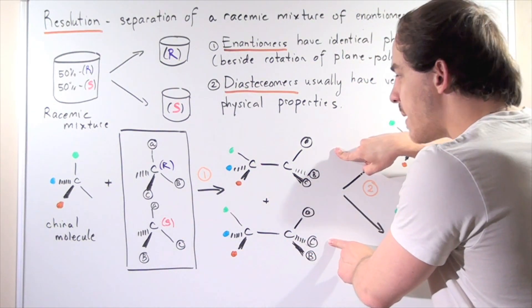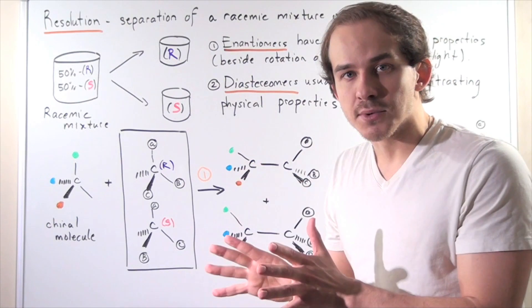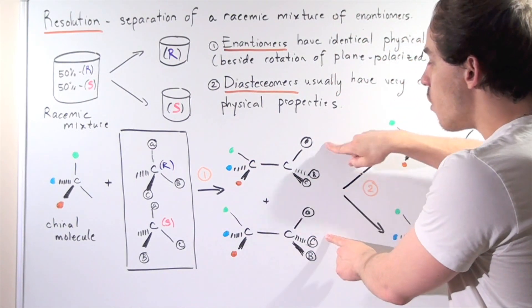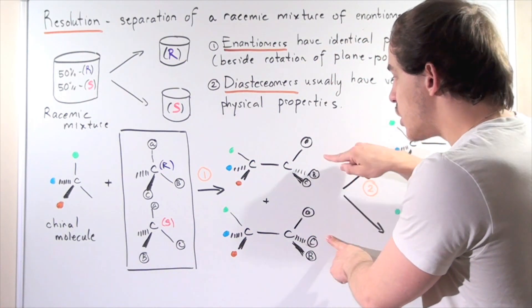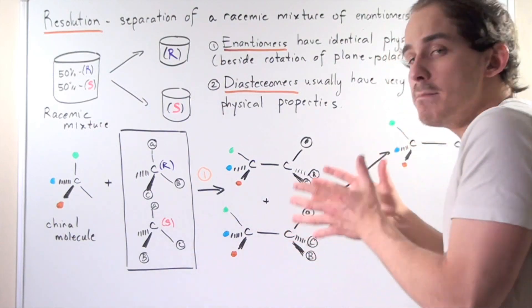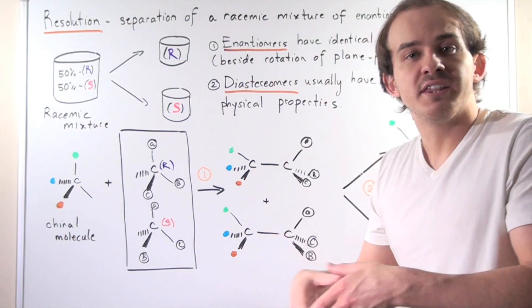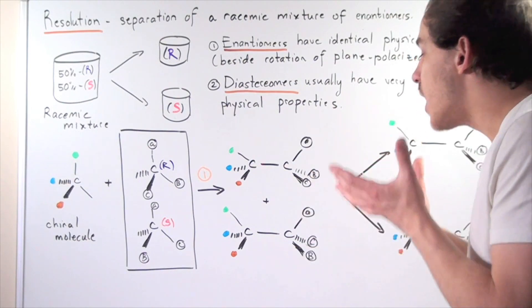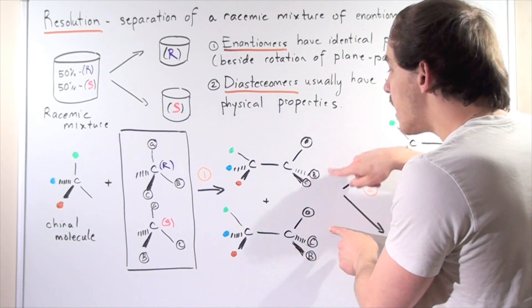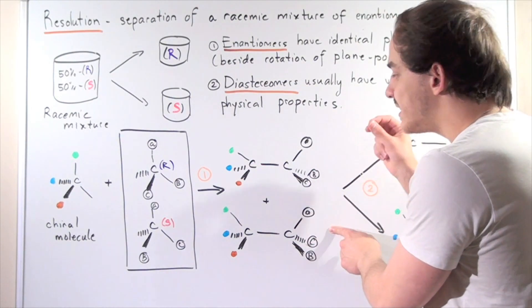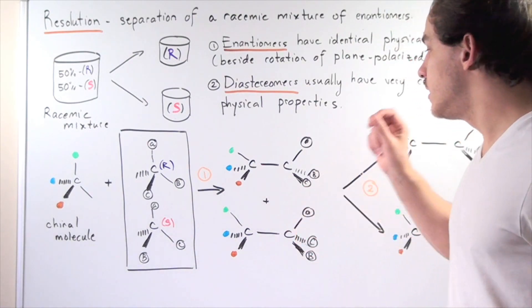Now, these two compounds are no longer enantomers. We call them diastereomers. That means they differ in their melting point, their boiling point, their density, their physical properties. Now we can separate them according to their differences in physical properties.